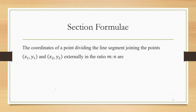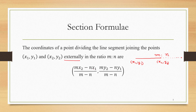Let's move to the next section formula: dividing the line segment joining two points externally in the ratio m:n. The concept is we have a point x1,y1 and x2,y2. We extend it externally so that the line is in the ratio m:n, and we find the endpoint of this extension. The formula is given by (mx2 - nx1)/(m-n), (my2 - ny1)/(m-n).